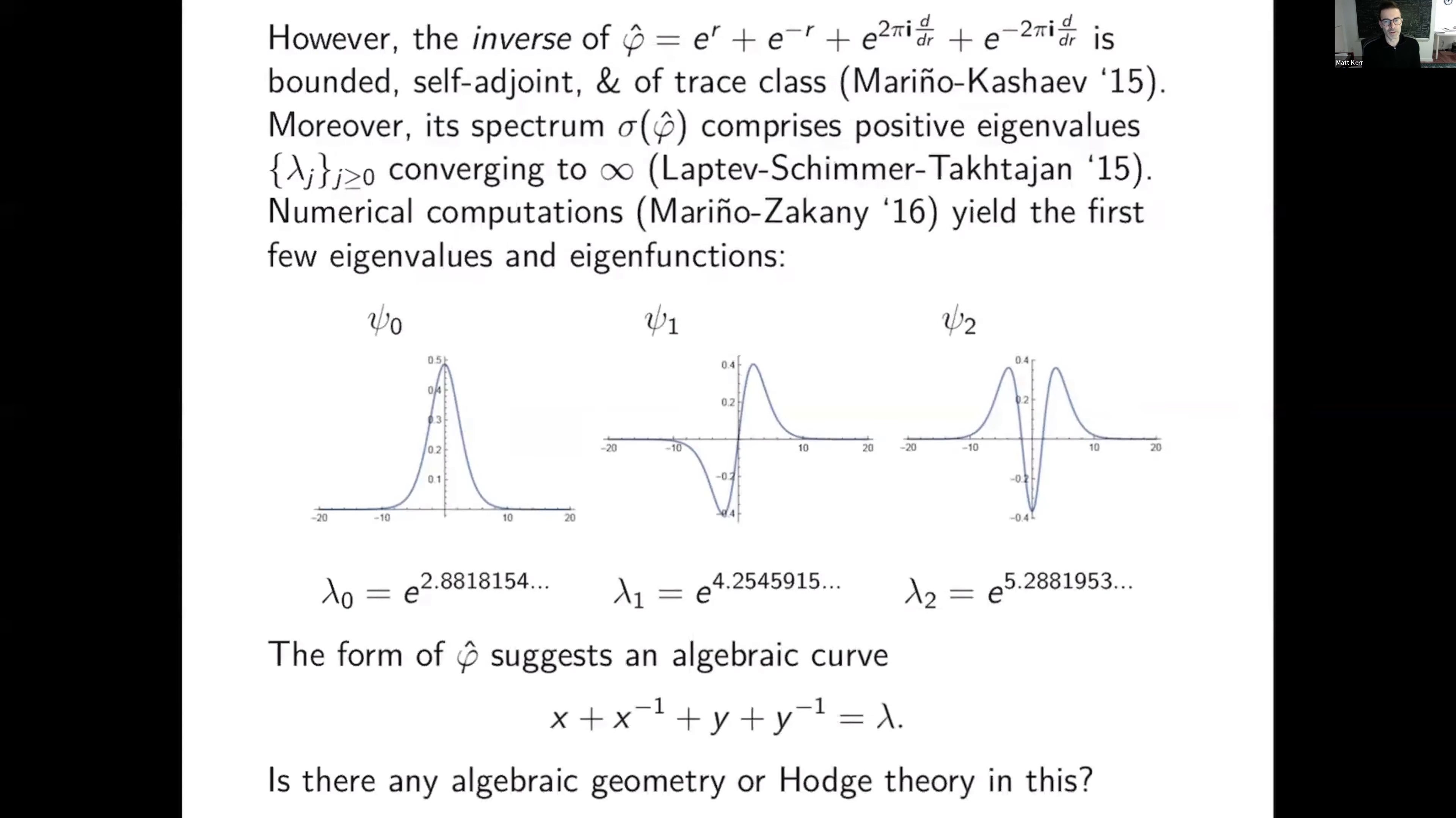The form of this quantum curve, or it will be a quantum curve, the form of phi hat suggests an algebraic curve, x plus x inverse plus y plus y inverse equals lambda. So level sets of a Laurent polynomial. Is there any algebraic geometry or Hodge theory in this?